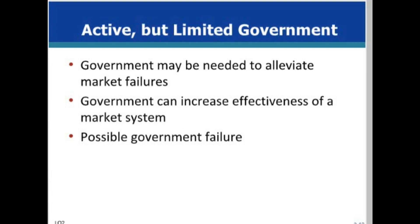Although the market system promotes efficiency, it has certain shortcomings. There can be an overproduction of goods that have social costs and an underproduction of goods that have social benefits. There are tendencies for businesses to increase monopoly power, though governments also have shortcomings that lead to misallocation of resources.